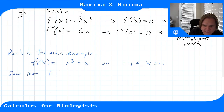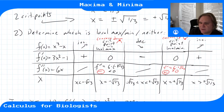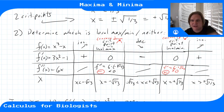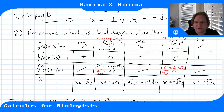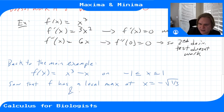The sign table showed increasing to decreasing, the second derivative was negative (concave down), and the first derivative was zero—all three confirm a local maximum at x = -√(1/3). There is a local minimum at x = +√(1/3).